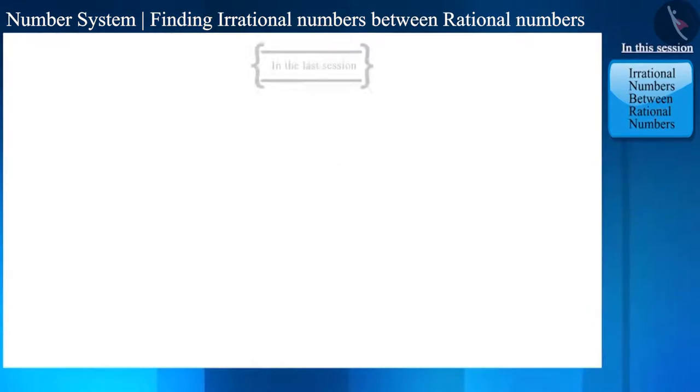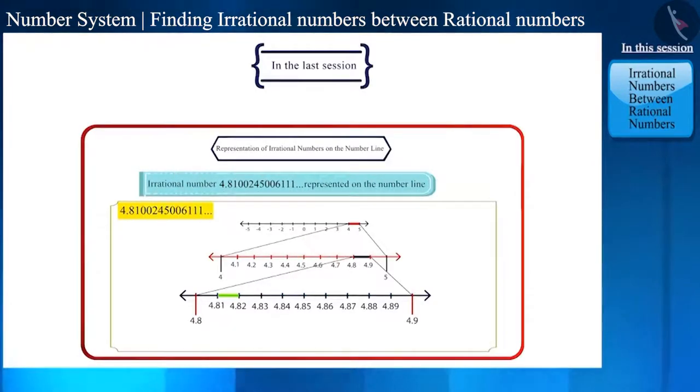The digits after the decimal of irrational numbers are infinite and unlimited. So it is difficult to represent them on the number line. But we can definitely tell between which two numbers it is located.